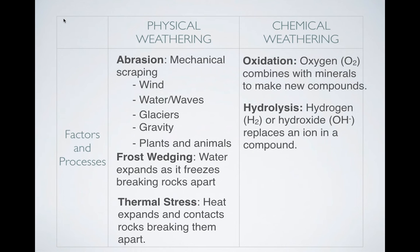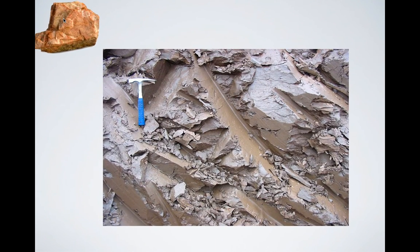What about hydrolysis? That's when hydrogen or hydroxide replaces an ion inside of a compound. The prefix 'hydro' means water, and water is made up of hydrogen and oxygen — so you've got hydrogen and hydroxide (OH⁻). That's how clay is formed. The rock in the upper left is what it looks like before hydrolysis, and after hydrolysis that stuff in the center — that's clay.